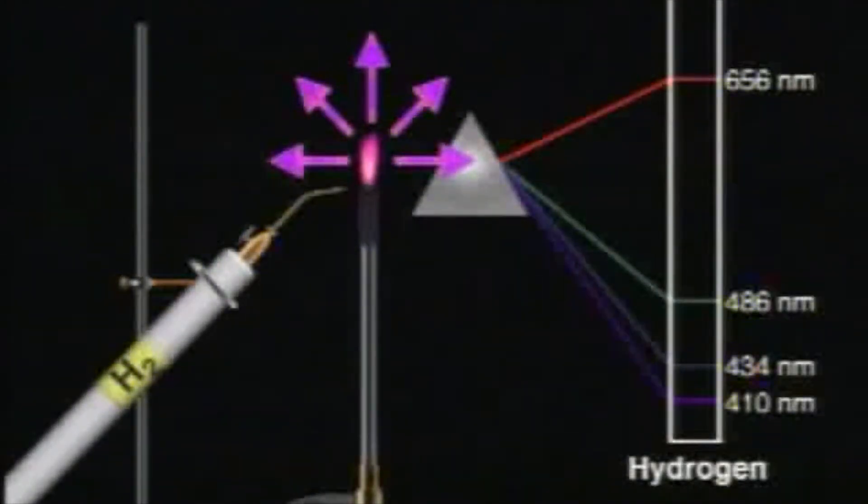If a sample of hydrogen gas is heated, it gives off light. When you view this light through a prism, you'll see an emission spectrum consisting of bright lines at specific frequencies.